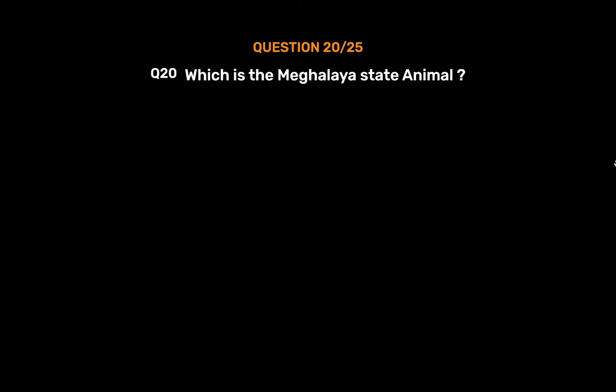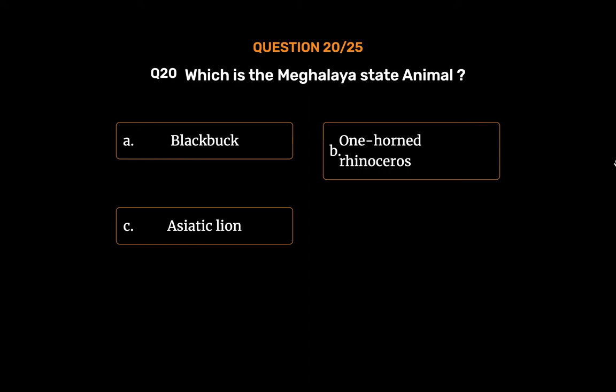Question number 20. Which is the Meghalaya state animal? Option A: Black Buck. Option B: One-Horned Rhinoceros. Option C: Asiatic Lion. Option D: Clouded Leopard.